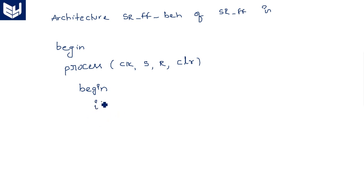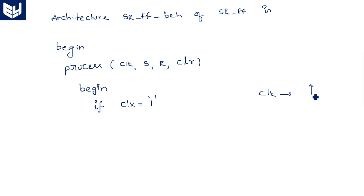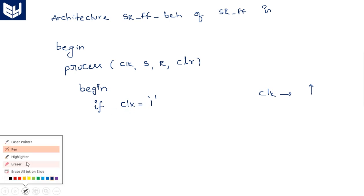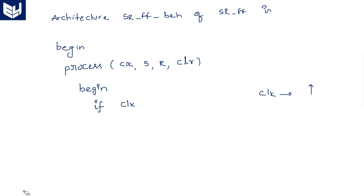Inside the process, we check: if clock — two different styles exist. The clock may work with rising edge, written as clock'event and clock = '1'. This is what we generally write: clock'event and clock = '1'.